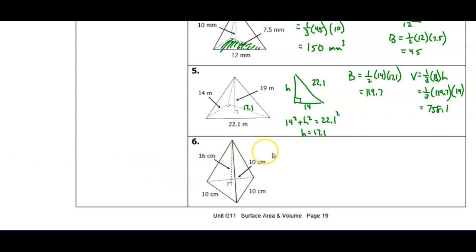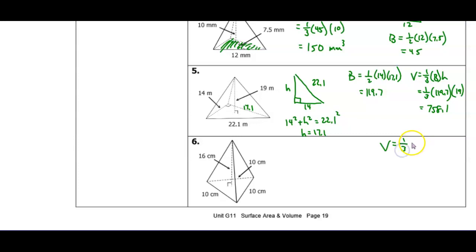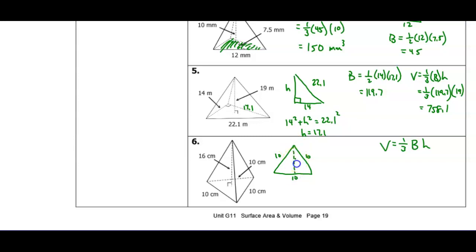For number six, you will do this one yourself. Draw an equilateral triangle separately with sides of 10, 10, and 10, then draw in the height and calculate it. Get the area of the base and put it into the volume formula: one-third times the area of the base times the height. The pyramid's given height is 16. Draw that equilateral triangle first, label your 10s, and calculate the triangle's height in order to find the base area.